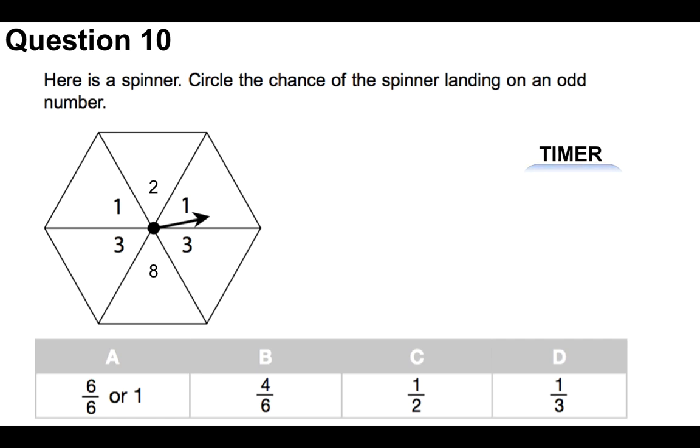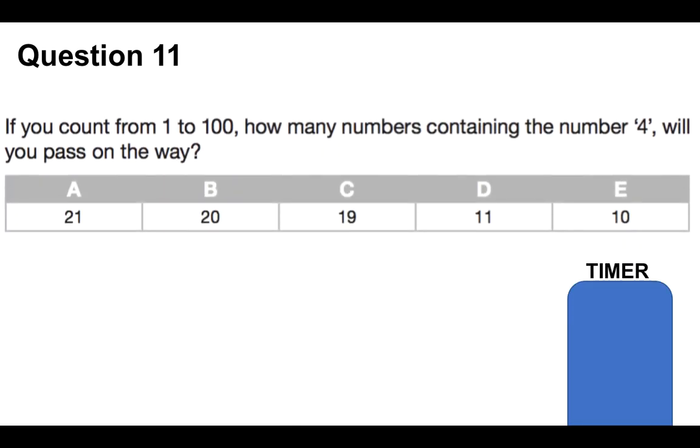Hopefully you're still enjoying these. Question number 11: If you count from 1 to 100, how many numbers containing the number 4 will you pass on the way? This is quite a tricky one. It sounds really easy, but it's quite tricky. Options are A: 21, B: 20, C: 19, D: 11, E: 10. So I'll start you off. Obviously 4 is 1, 14 is 2, 24 is 3, and then you do the rest.